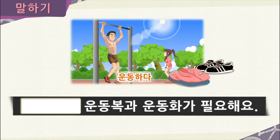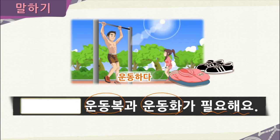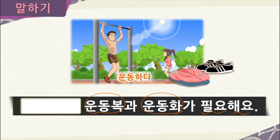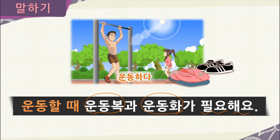In this sentence, we have 운동복 (workout clothes) and 운동화 (tennis shoes), with the verb 필요해요 (to need). When do you need these items? When they exercise — 운동하다. So using 을 때: 운동할 때 운동복과 운동화가 필요해요 — they need their workout clothes and tennis shoes when they exercise.